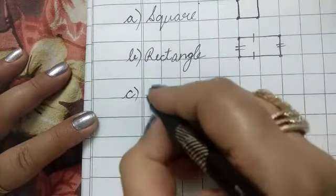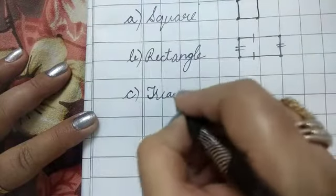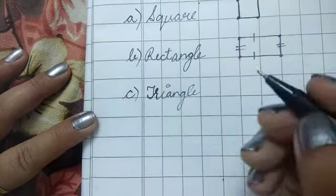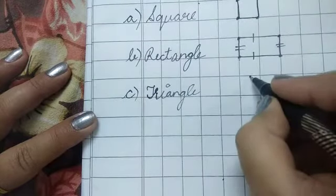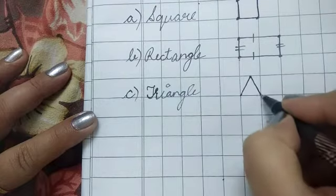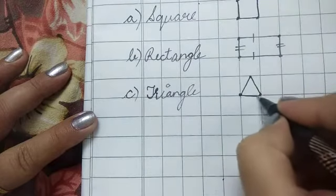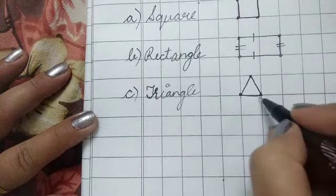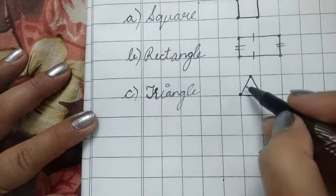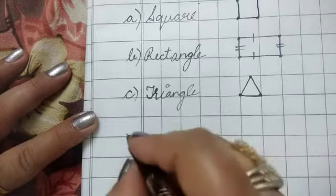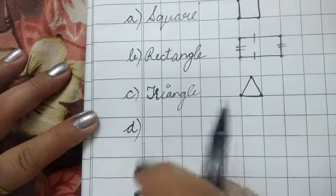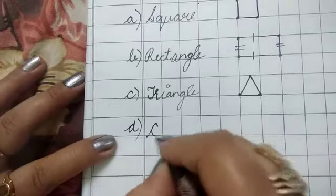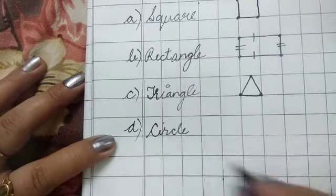Third one is triangle. Triangle has three corners: one, two, and three. Three sides: one, two, and three. D is circle.